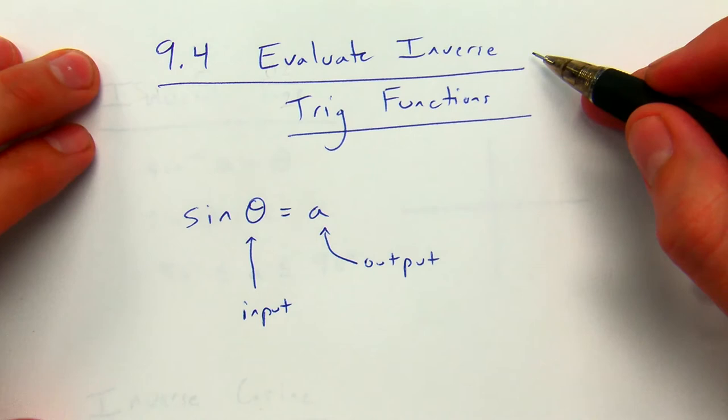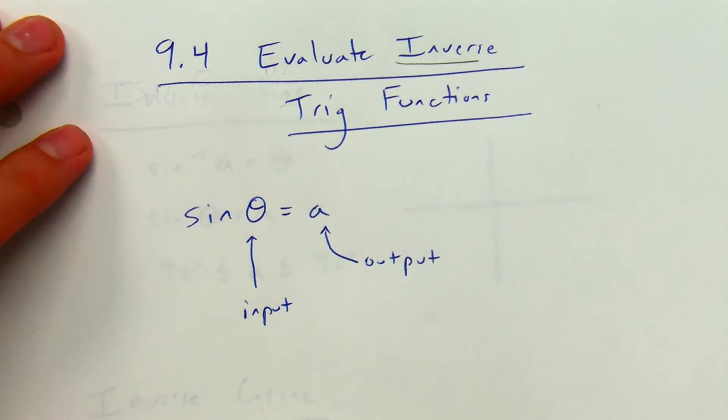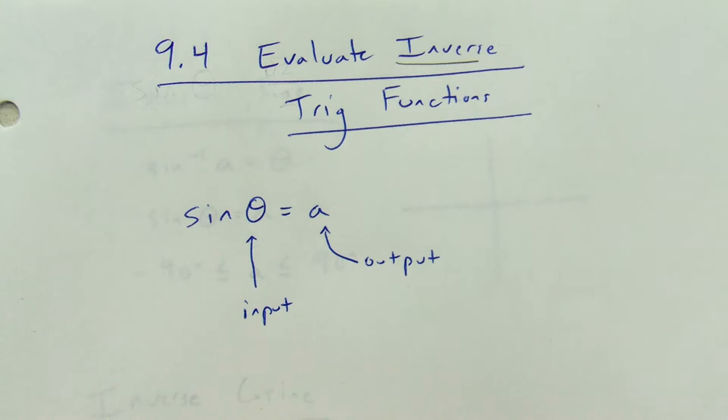This is part one of a video on evaluating inverse trig functions. Before we dive in, let's remember what inverse functions are. One of the main things to remember is that when you find an inverse function, you switch x and y. So x is normally what you plug into an equation and y is what you get out — when finding an inverse function, you're switching the input and the output.